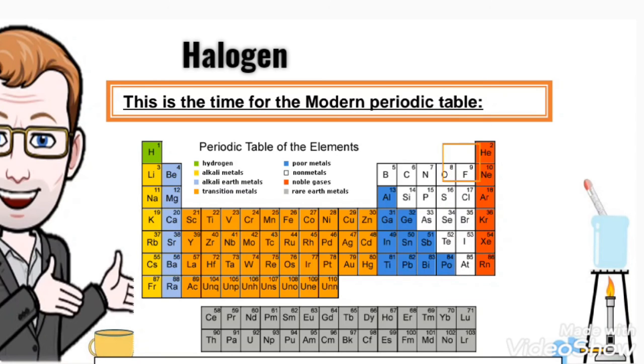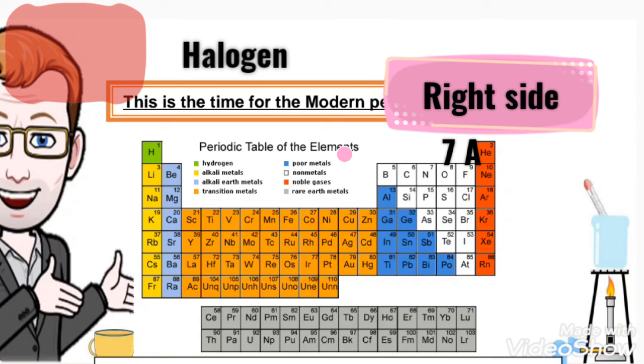Group 7A, before the noble gases, is actually group 17. They are located on the right side of the modern periodic table, before the inert gas in block P.